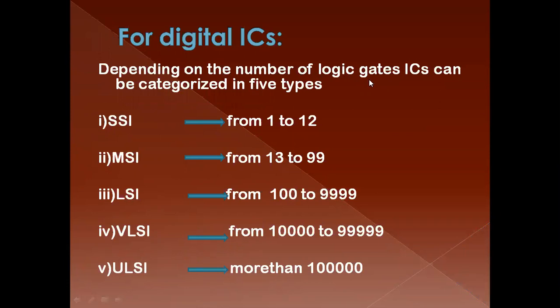For digital ICs, we use logic gates. For SSI, the logic gates range is between 1 to 12. For MSI, the range is between 13 to 99. For LSI, we can use logic gates between 100 to 9999. For VLSI, we can use logic gates between 10,000 to 99,999. For ULSI, we can use more than 1 lakh logic gates per chip. This is the classification for digital ICs.